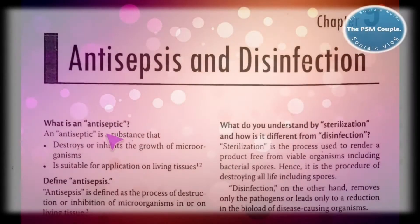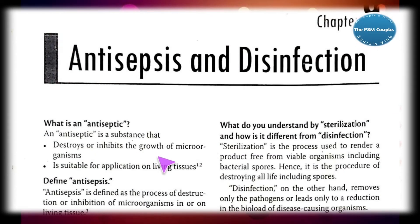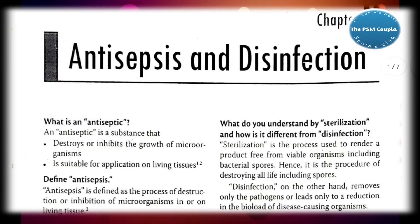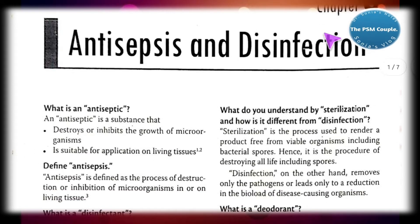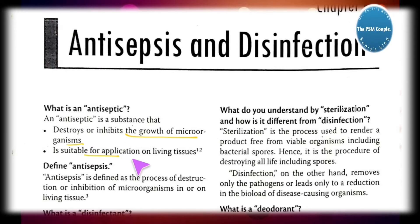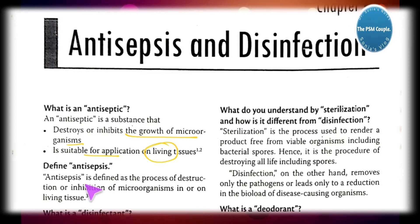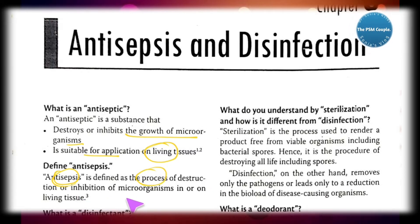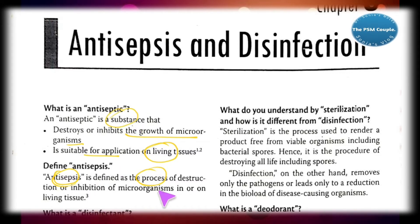What is an antiseptic? It is a substance that destroys or inhibits the growth of microorganisms. It is suitable for application on living tissues. Now, defining antisepsis: antisepsis is the process for the destruction or inhibition of microorganisms in or on living tissue. So antiseptic is a substance and antisepsis is the process.